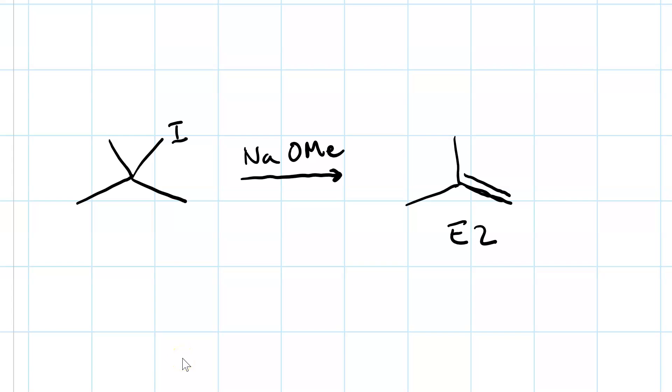On the other hand, sometimes you only get one product, like when you treat a tertiary alkyl halide with sodium methoxide. You only get a single E2 product. So how do you know?